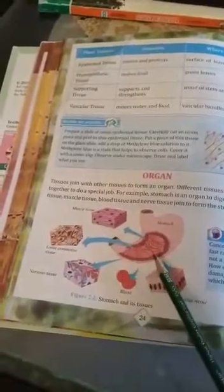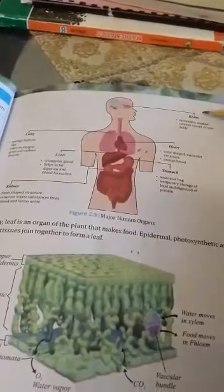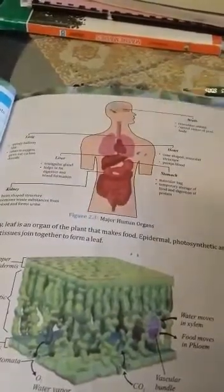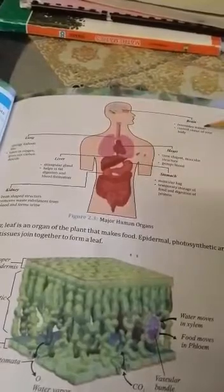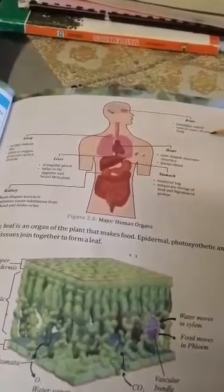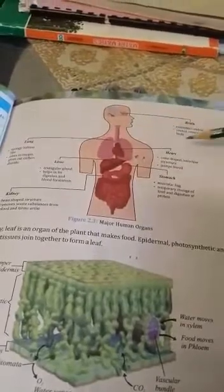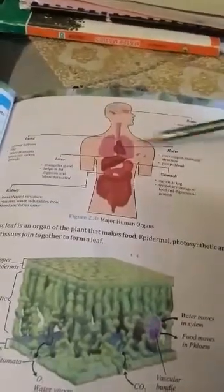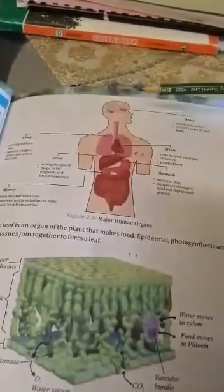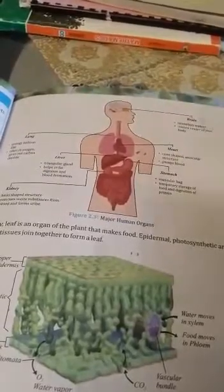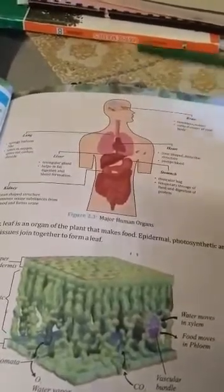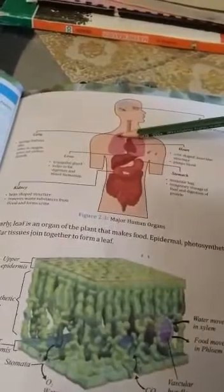Now we will read about the major human organs. The first organ is the brain — it resembles a walnut and is the control center of your body. The second organ is the heart — it is a cone-shaped muscular structure that pumps blood towards the body. The next organ is the lungs — they are spongy and balloon-like.